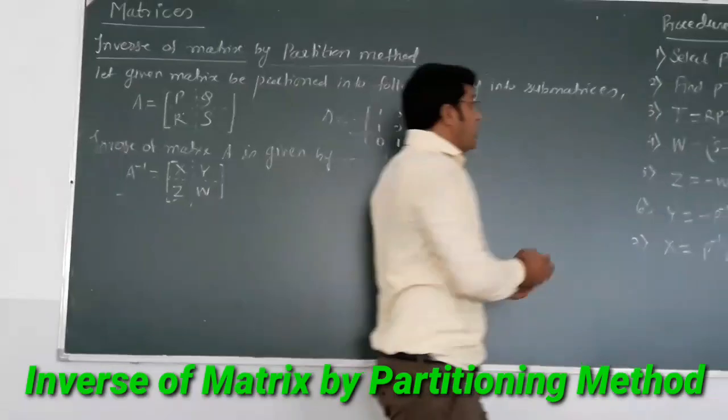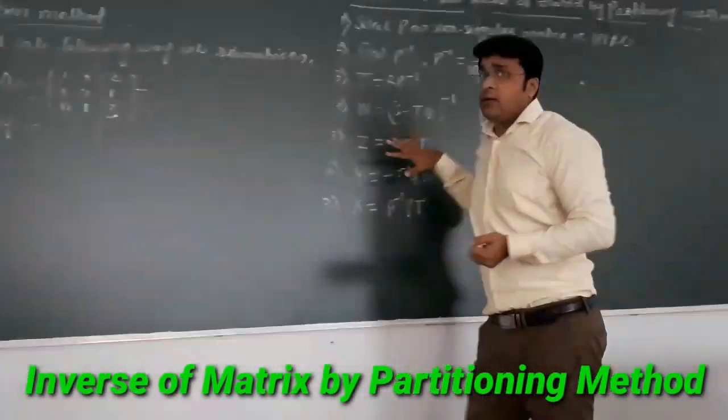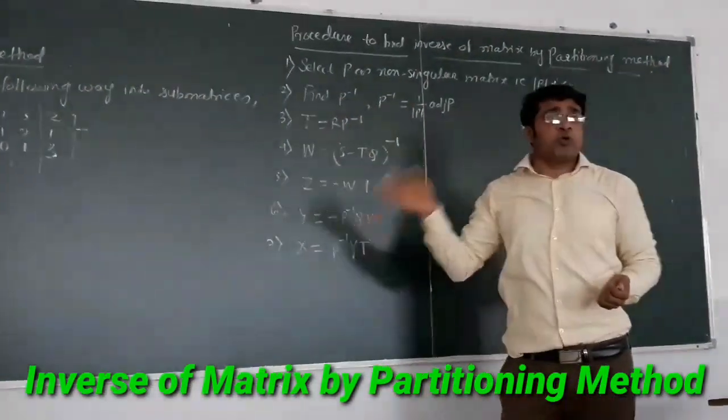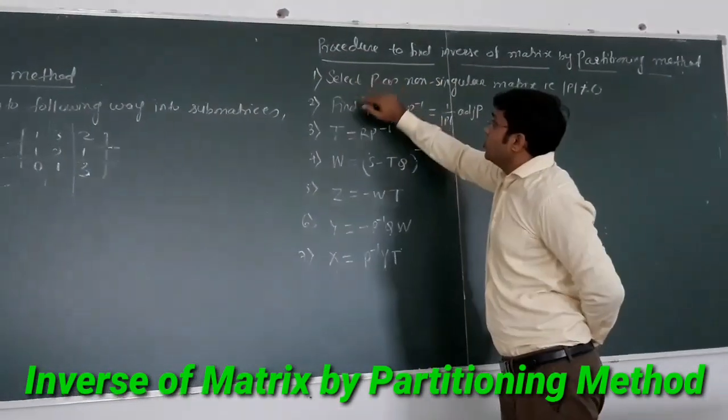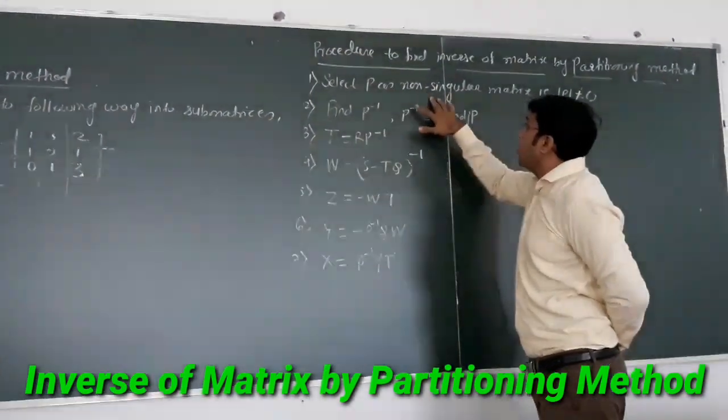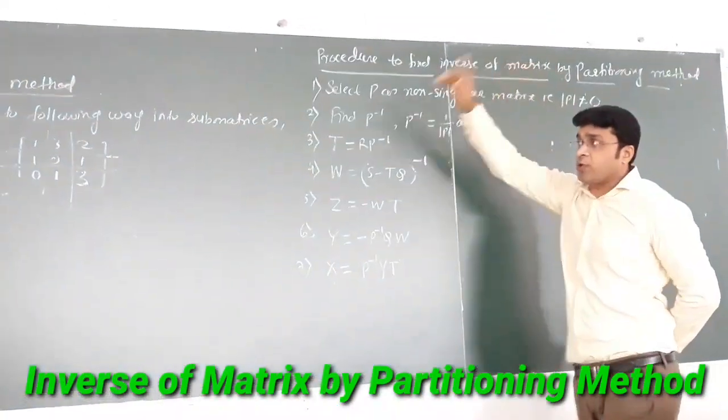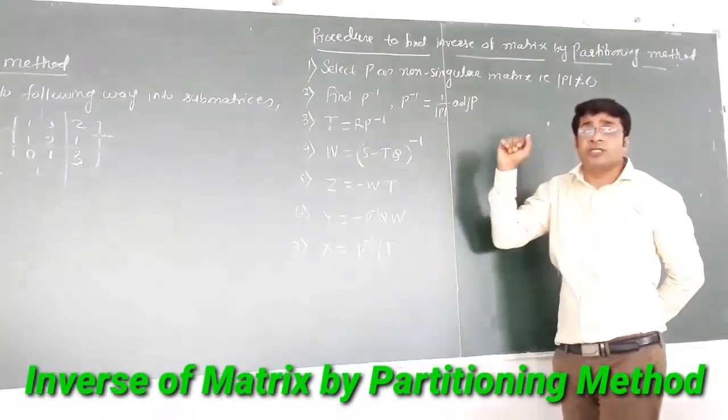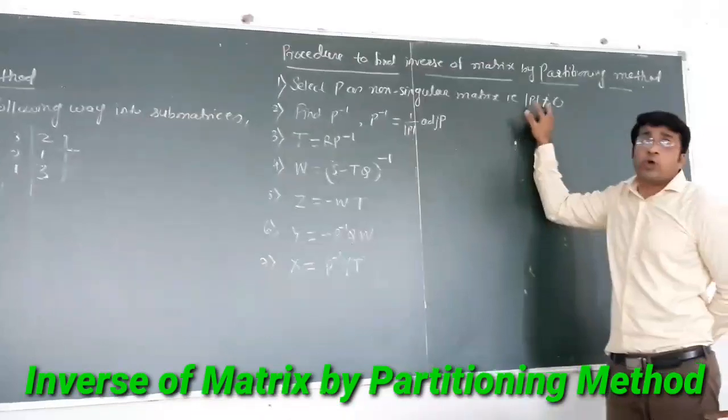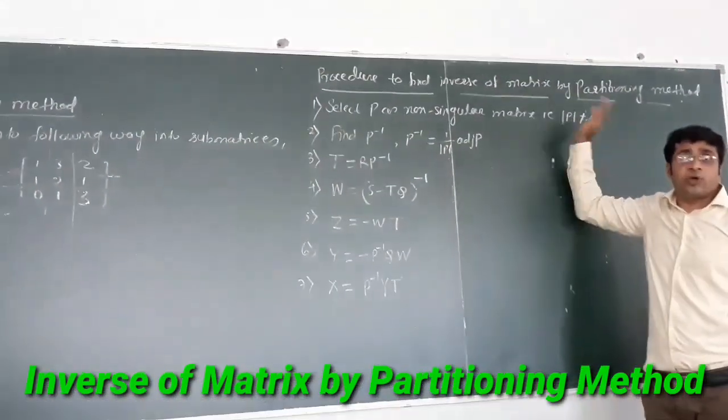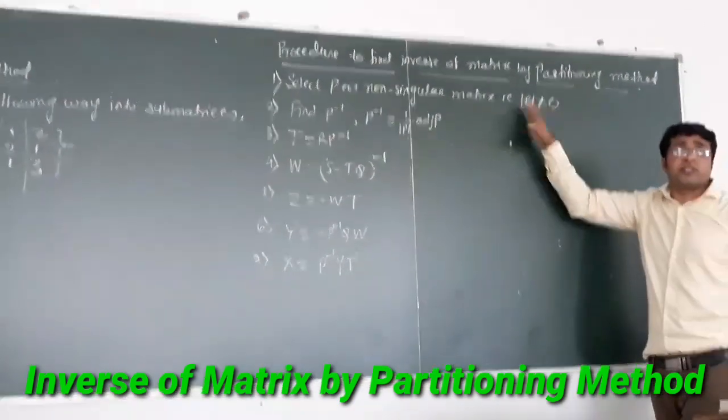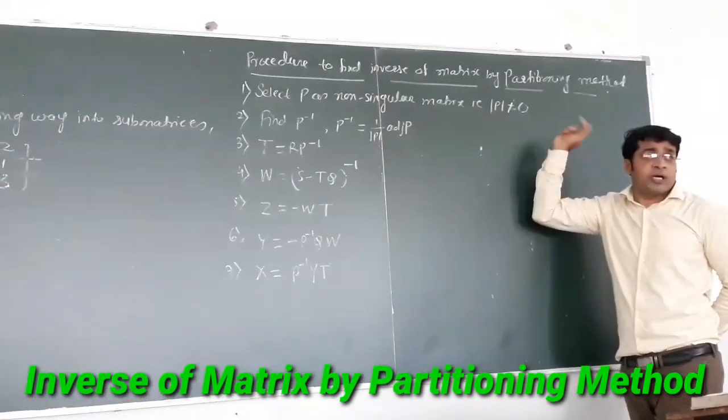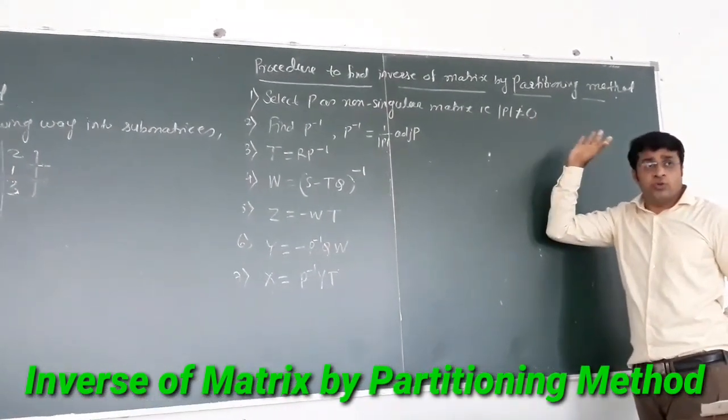We are having a set of formulas already derived. First of all, you select P as non-singular matrix. If it is square, then that should be non-singular. Non-singular means the determinant should not be equal to 0. If the determinant is 0, we cannot find out the inverse.